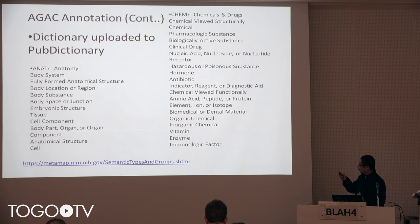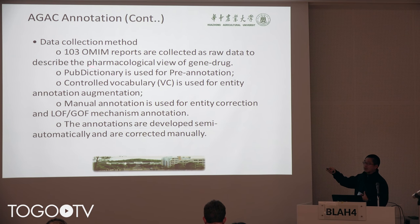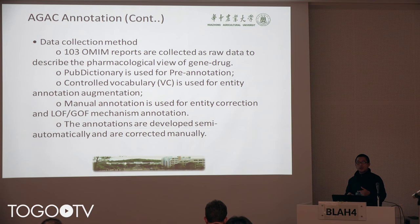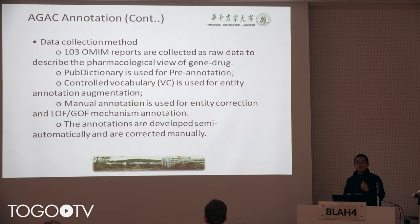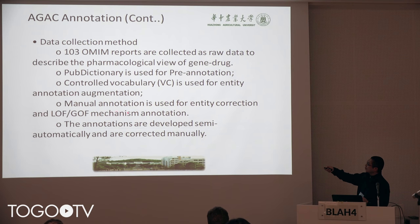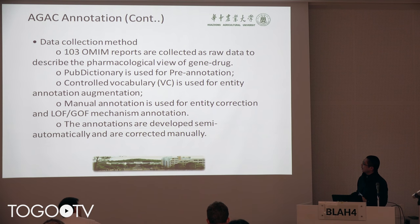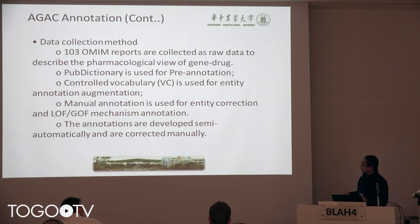We also use PubAnnotation to do some pre-annotation. The pre-annotation helps us to do trigger word detection, and we will use it as a feature function in CRF — Conditional Random Field. We will also use manual curation to do the adaptation. These annotations are developed semi-automatically and corrected manually. These are the dictionaries we use from the MetaMap semantic types.